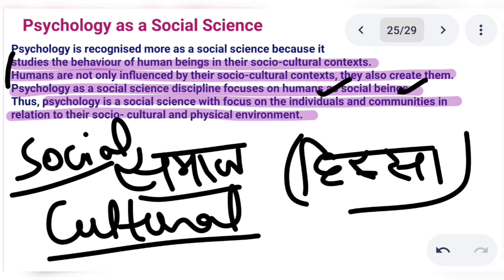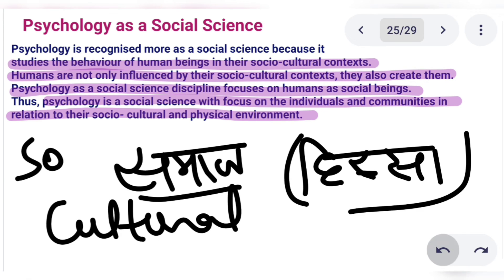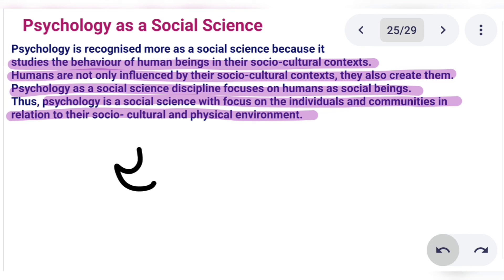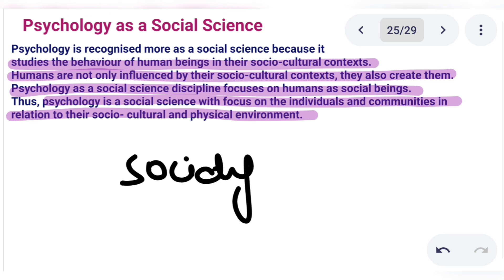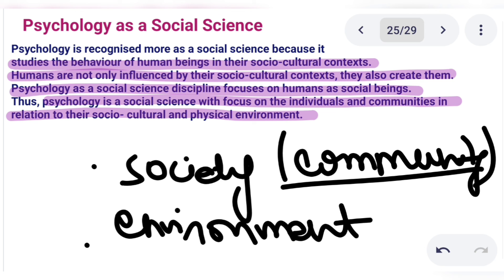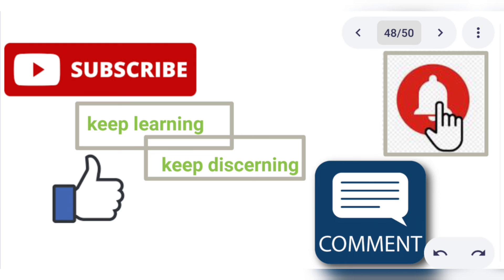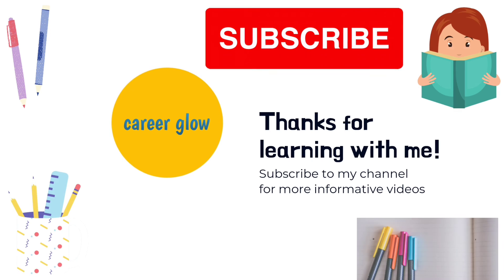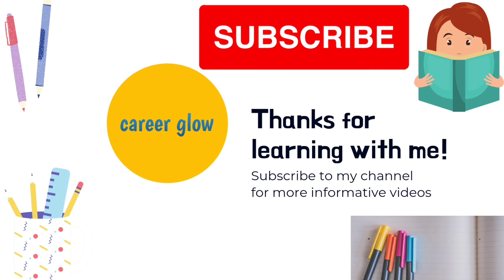We study humans on both an individual and community basis — what is our relation to our environment, how is our relationship with our society. Psychology as a social science examines all these relationships. So learners, if you like this lesson please like and subscribe to the channel. Keep learning, keep making notes, keep reading, and keep watching my videos. Thank you so much.